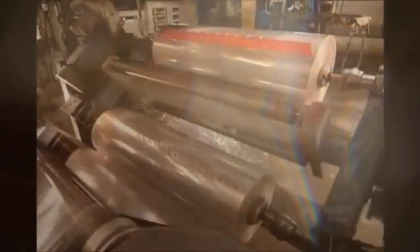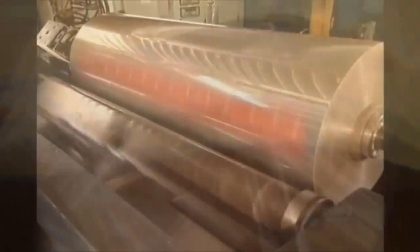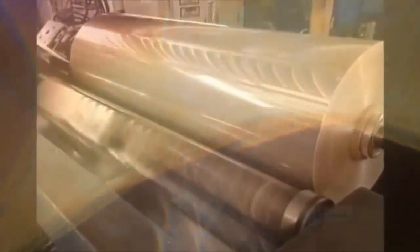The rolls go on a machine called the unwinder. Workers then position a strip of adhesive splicing tape along the end of each roll. This will enable them to connect one roll after another, creating an uninterrupted feed to the production line.